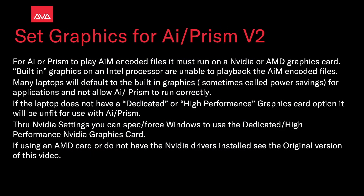For AI or Prism to play AIM encoded files, it must be run on an NVIDIA or AMD graphics card. Built-in graphics on an Intel processor are unable to play back AIM encoded files. Many laptops will default to the built-in graphics, sometimes called power savings, for applications and will not allow AI or Prism to run correctly.